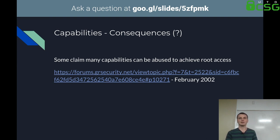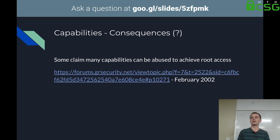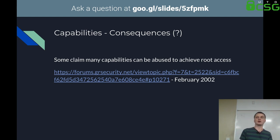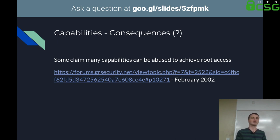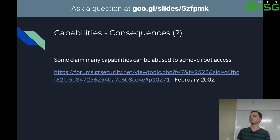There are some consequences of the capability system. Some people have demonstrated that a large majority of the capabilities are more or less equivalent to root access. There's a post by one of the GRSecurity developers that describes things like how the ability to mount a file system is equivalent to root, because you can continue to backdoor things. Their organization has since stopped developing their SE Linux / AppArmor-style system. It's an interesting read if you want to go deeper on capabilities.